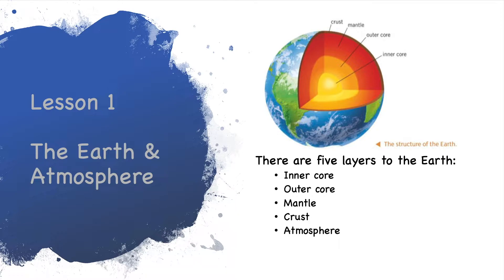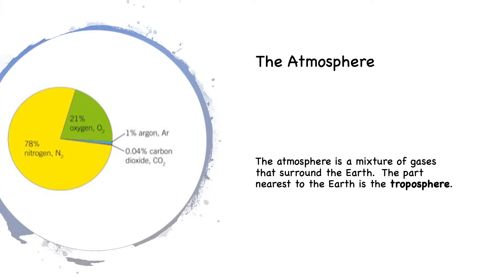You will learn more about this in geography. The crust is the solid layer at the Earth's surface, between 8 to 40 kilometres thick. Our atmosphere is a mixture of gases which surround the Earth. The part nearest the Earth is called the troposphere. The main gases found in the troposphere are nitrogen at 78%, oxygen at 21%, and argon at 1%. There is also a very small amount of carbon dioxide present at 0.04%, along with a number of other gases in even smaller amounts.